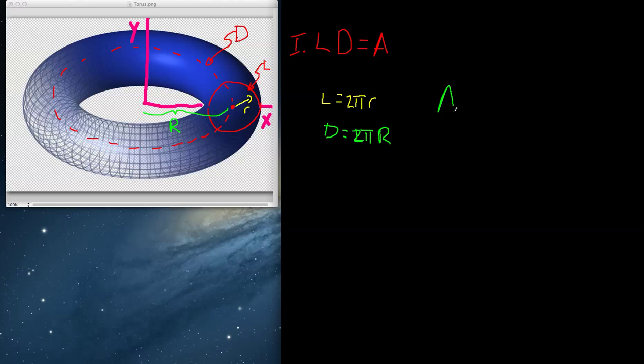That means that the area of a torus is 2 pi small r, this distance, times the distance that the centroid covers as it revolves around the axis. And if you really want the answer, it's 2 pi r squared large R.